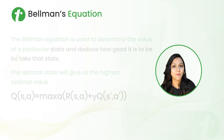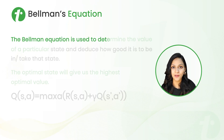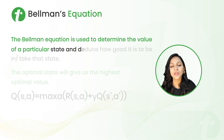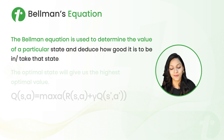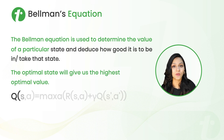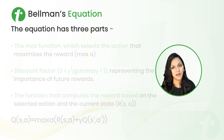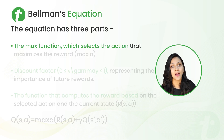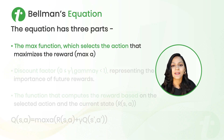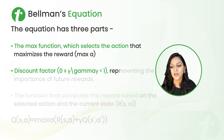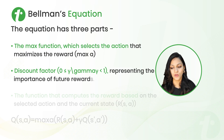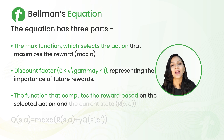Now let's look at Bellman's equation. Bellman's equation is used to determine the value of a particular state and deduce how good it is to be in that state. The optimal state will give us the highest optimal value. There are three parts: first, the max function, which selects the action that maximizes the rewards; next, the discount factor represented by gamma, with values between 0 and 1 representing the importance of future reward; and the function that computes the reward based on the selected action and current state, represented as R(S, A).